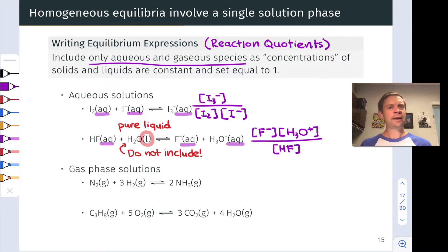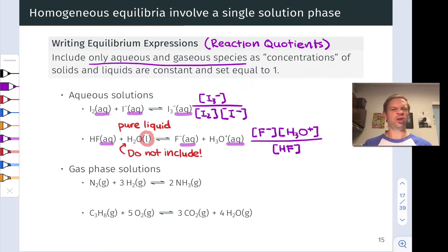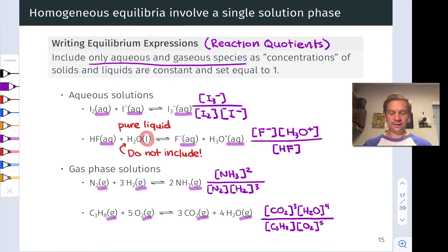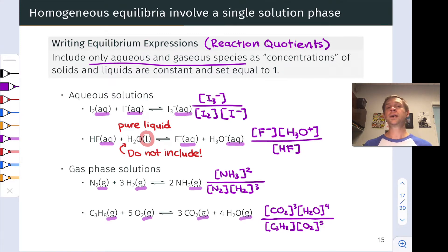This may look like a heterogeneous equilibrium because water is a liquid, but water is the solvent. So water, HF, F⁻, and H₃O⁺ are all in a common phase of an aqueous solution — technically, this is still a homogeneous equilibrium. We can also write reaction quotients for gas phase reactions, which are homogeneous. The only difference with these last two examples is that we have exponents not equal to 1 because we have stoichiometric coefficients that are not equal to 1. Pure solids and pure liquids such as liquid water are omitted.